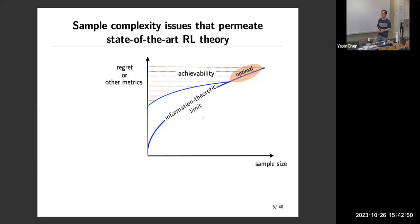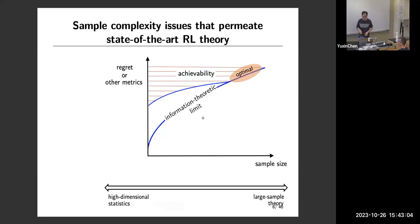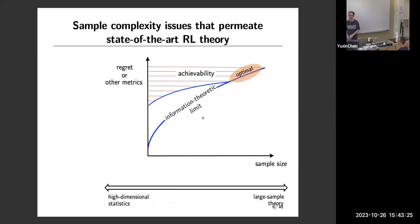This is like a big gap between achievability and converse — essentially about whether there is hope to close the gap between these two. This is also reminiscent of what has happened in the statistics literature. In classical statistics, people focus on large sample theory where samples approach infinity. The more recent trend moves to the high-dimensional regime where everything can be large, and we really have to rethink about what is going on — how to find optimal algorithms for these kinds of regimes.